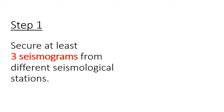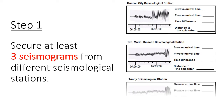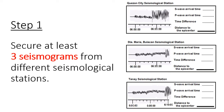Suppose that an earthquake happened. The first thing that seismologists do is to secure at least three seismograms from different seismological stations. For this activity, we have a hypothetical seismogram from Kensington City Seismological Station, Santa Maria Bulacan Seismological Station, and Tanay Seismological Station.